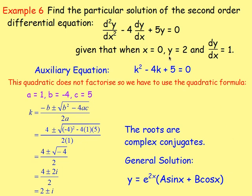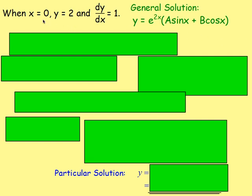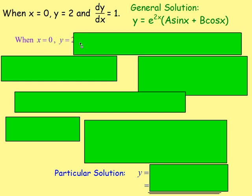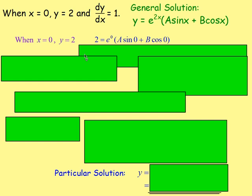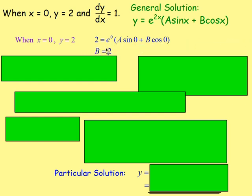We are told that when x is 0, y is 2, and dy/dx equals 1, so we can find the values of a and b. Substituting x = 0 and y = 2 into the general solution: 2 = e^(0)(a sin 0 + b cos 0). Since e^(0) = 1, sin 0 = 0, and cos 0 = 1, we get 2 = b. So b = 2.